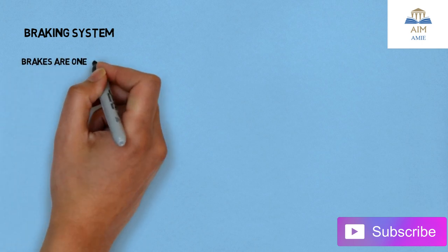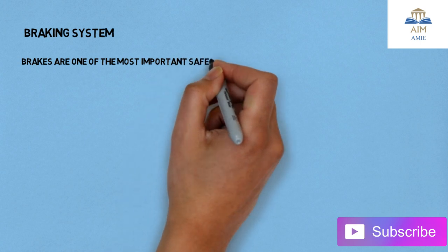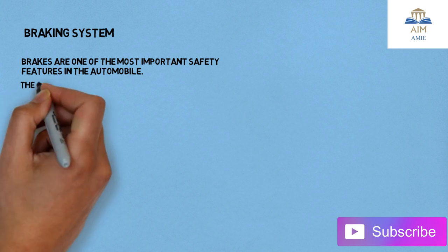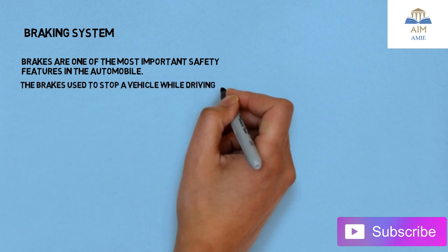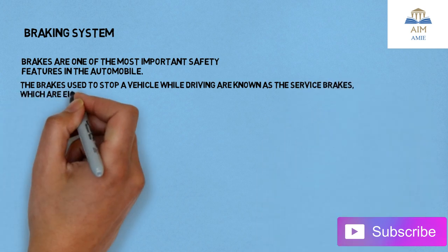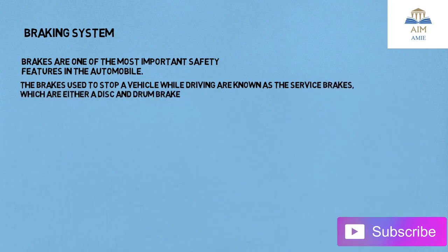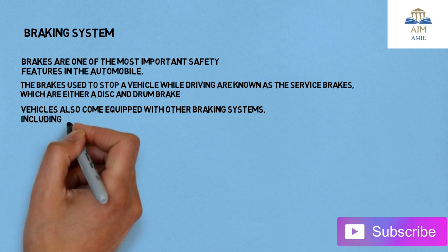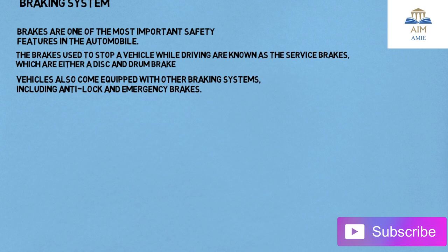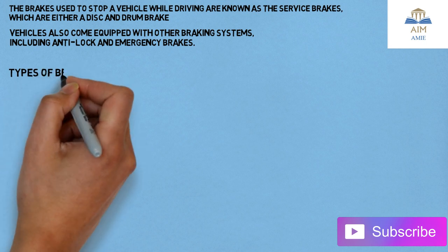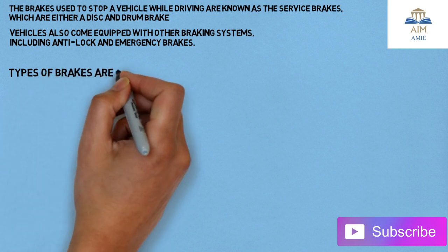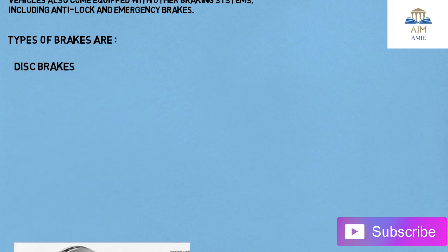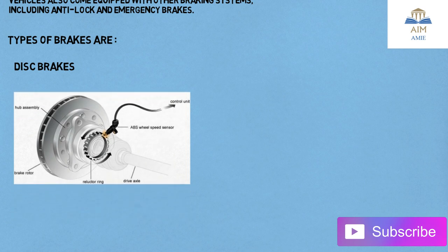The brakes are one of the most important safety features in an automobile. The brakes used to stop the vehicle while driving are known as service brakes, which can be either disc or drum brakes. Vehicles also come equipped with other braking systems such as the anti-lock braking system and emergency brakes. The first type is disc brakes — the shoe is kept between the rotating disc and is pressed against it.